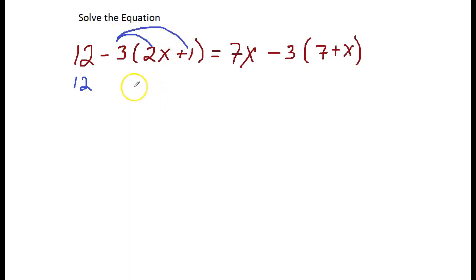Negative 3 times 2x is negative 6x. Negative 3 times positive 1 gives you negative 3. I'm going to bring down the equal sign, bring down the 7x. I have another negative 3 outside of parentheses, so I use my distributive property to multiply it times everything inside.